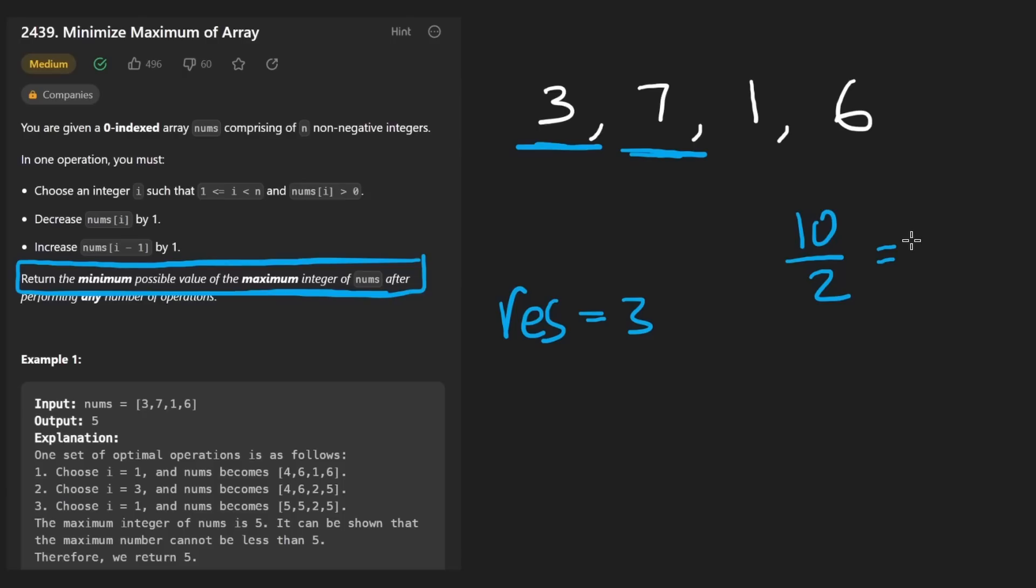We'd probably want to round up. So in the case where we had something like 11 divided by two, we'd get 5.5, but we'd probably want to round that up to six because remember, we're trying to return the maximum. So that's another observation to make.